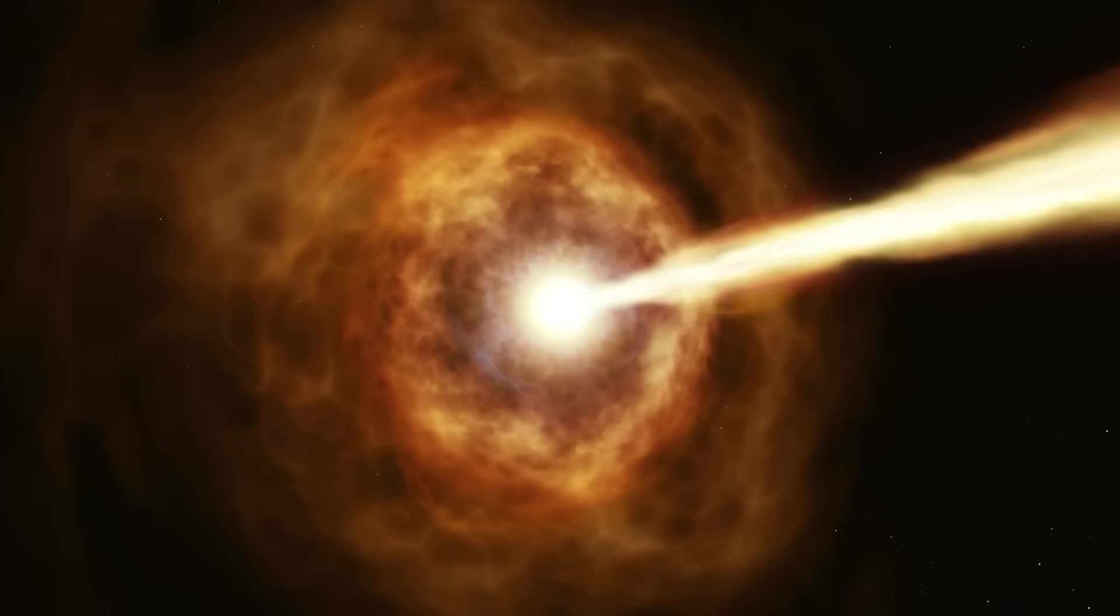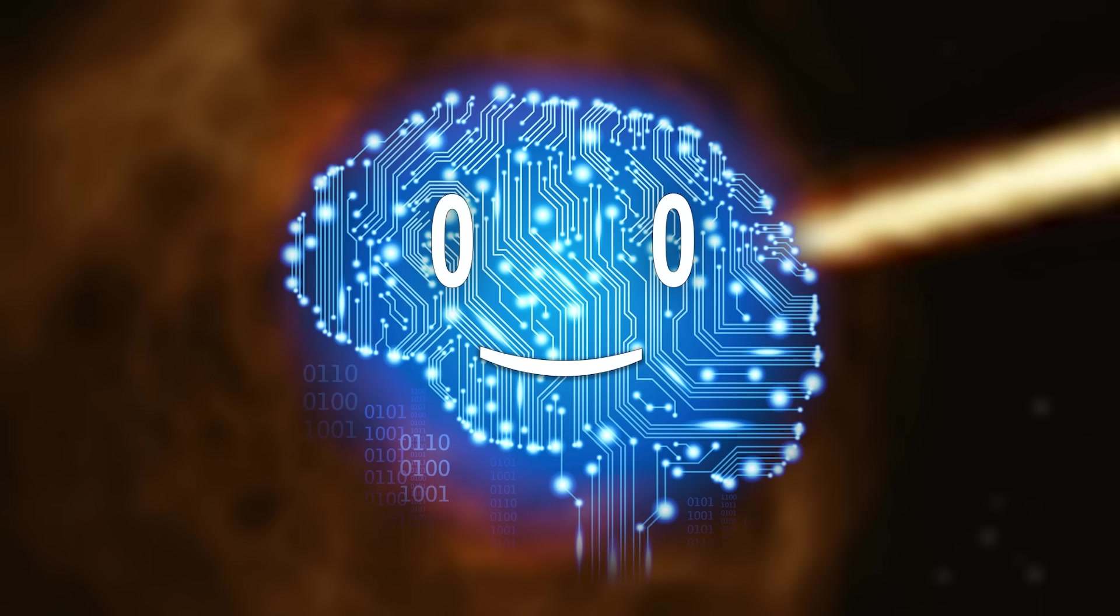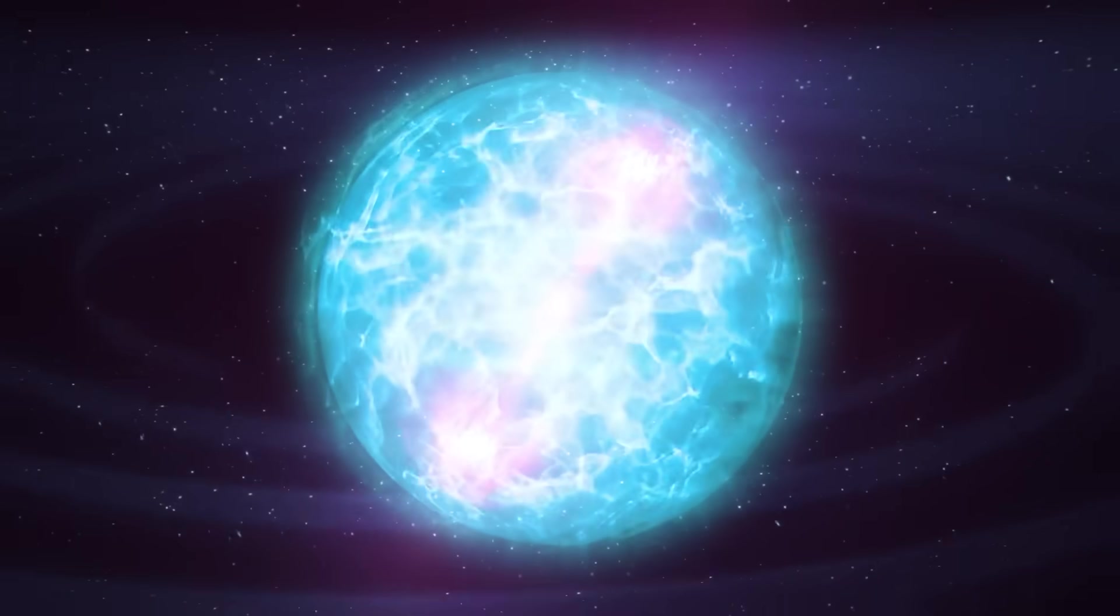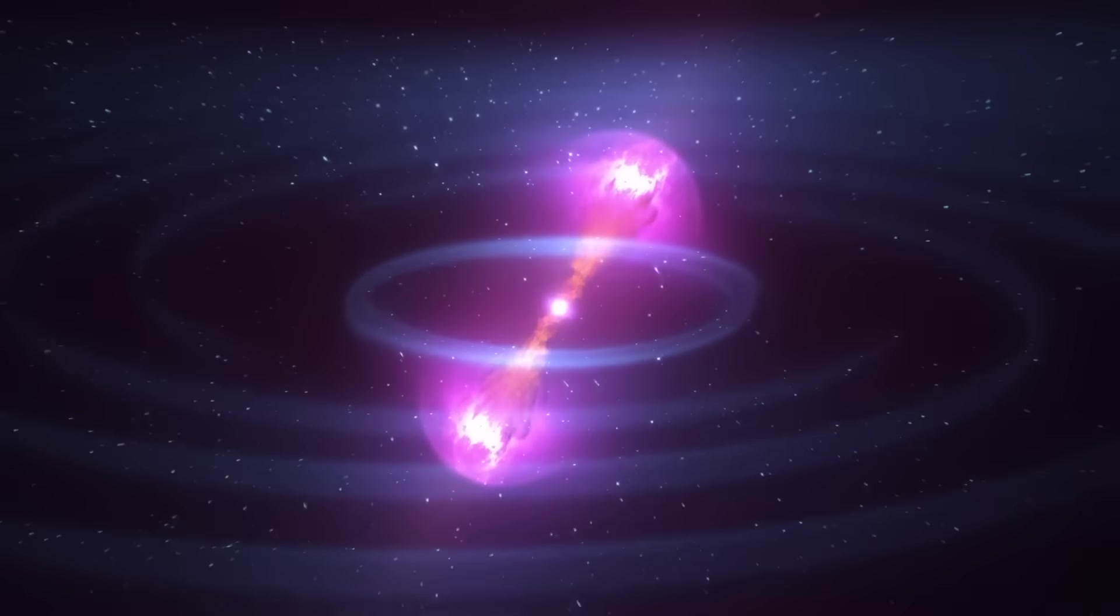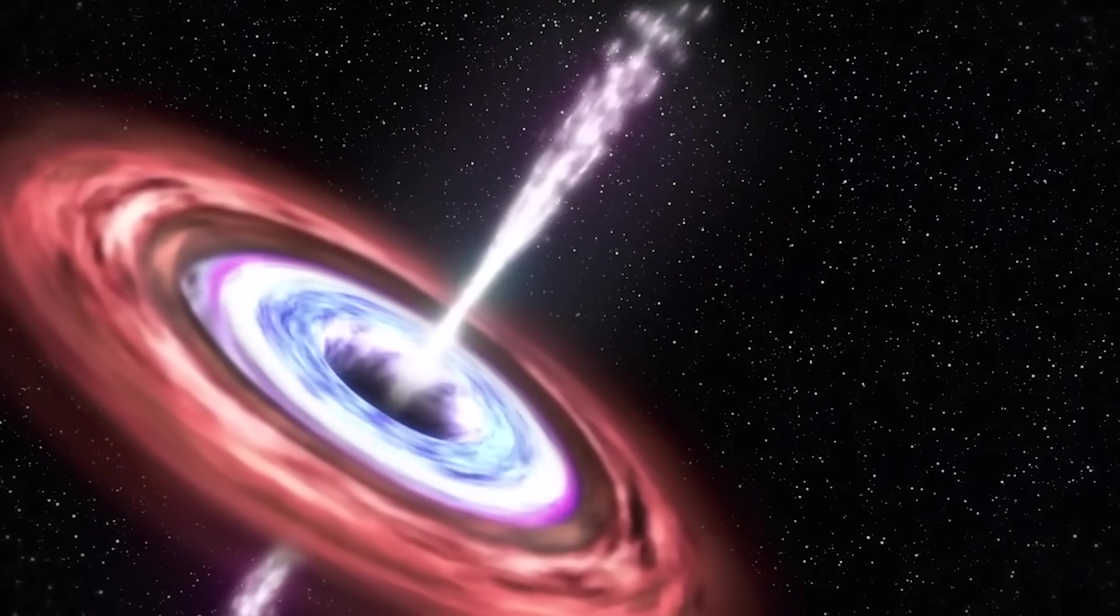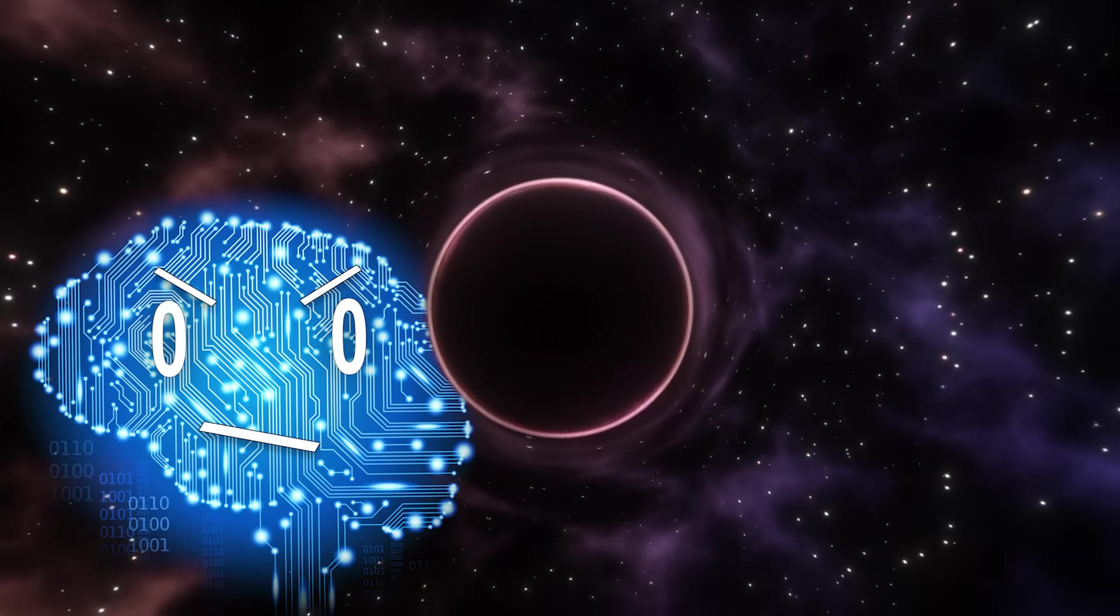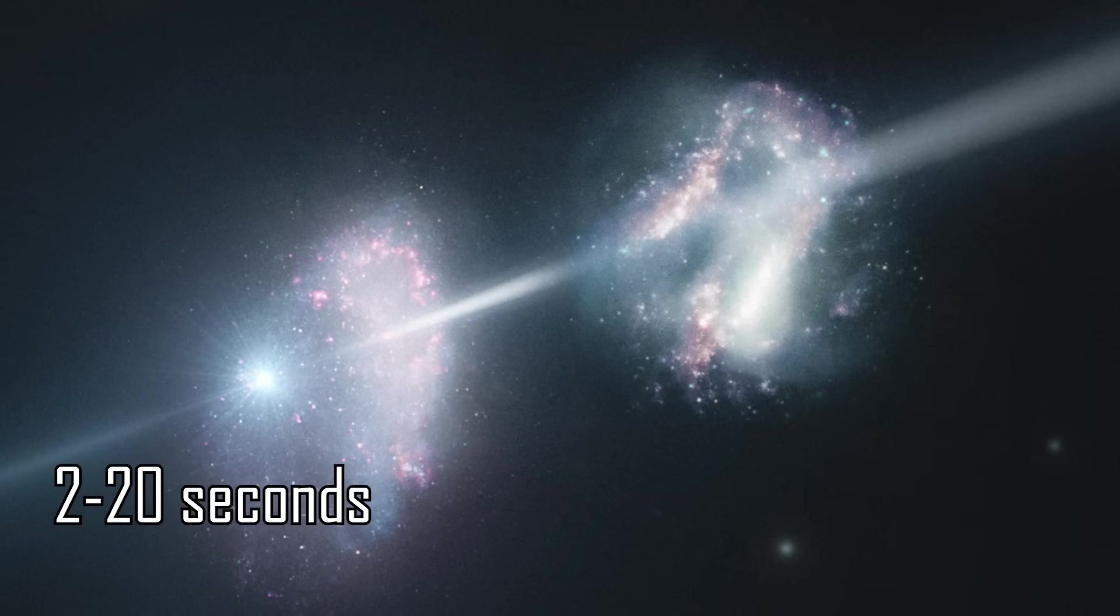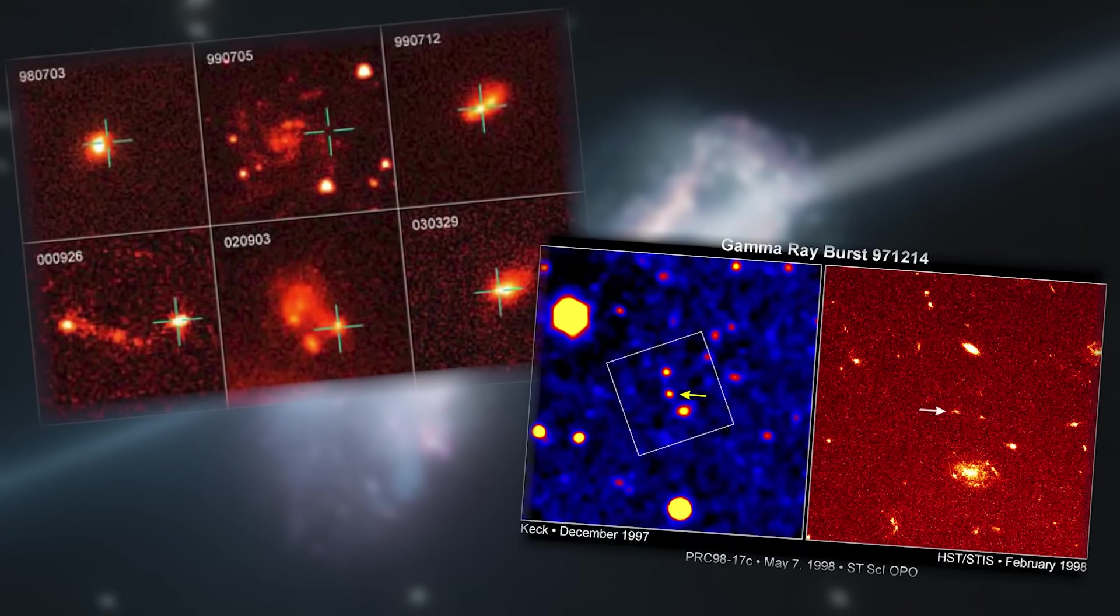Gamma ray bursts. Of course we can't have this video without mentioning the most powerful class of explosions in the universe. They happen when huge stars collapse into black holes, or when a neutron star gets eaten by a black hole. I'm starting to feel that these black holes are up to no good. Gamma ray bursts usually last about 2 to 20 seconds, and again, outshine entire galaxies in the process.